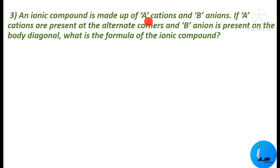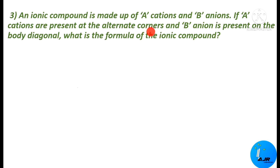Read the next problem: an ionic compound is made up of A cations and B anions. A cations are present at the alternate corners and B anions are present on the body diagonal. What is the formula of the ionic compound? There are eight corners normally, but since A cations are at alternate corners, A is present at only four corners. And the body diagonal has one B anion.